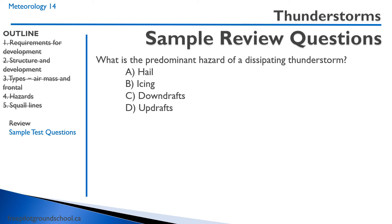Question: What is the predominant hazard of a dissipating thunderstorm? A) hail, B) icing, C) downdraft, D) updraft. All of these are hazards of thunderstorms, but a dissipating thunderstorm is typically characterized by extensive downdrafts — so the answer is C.